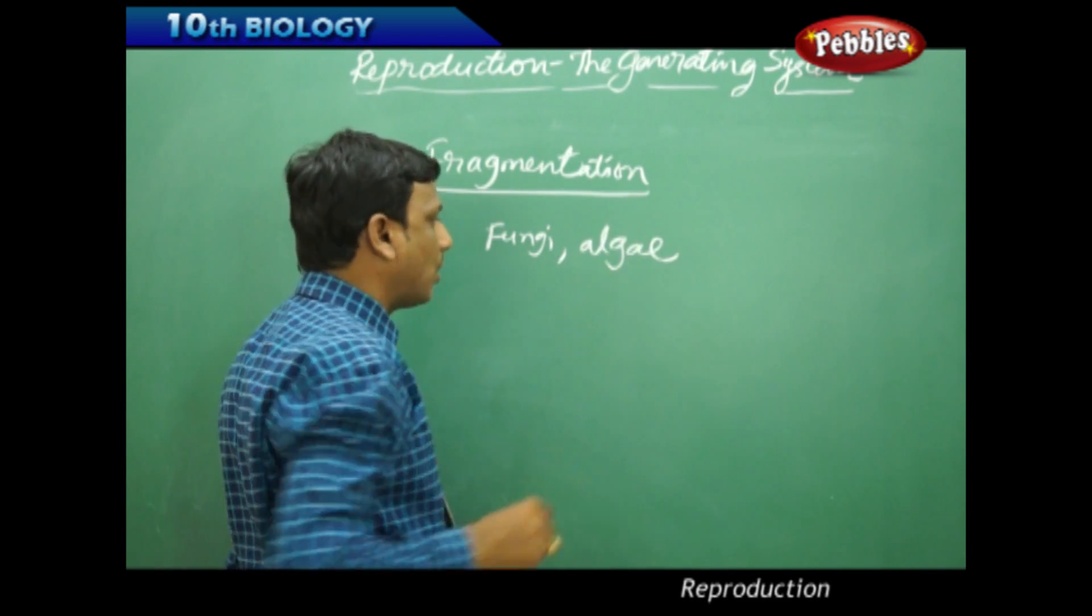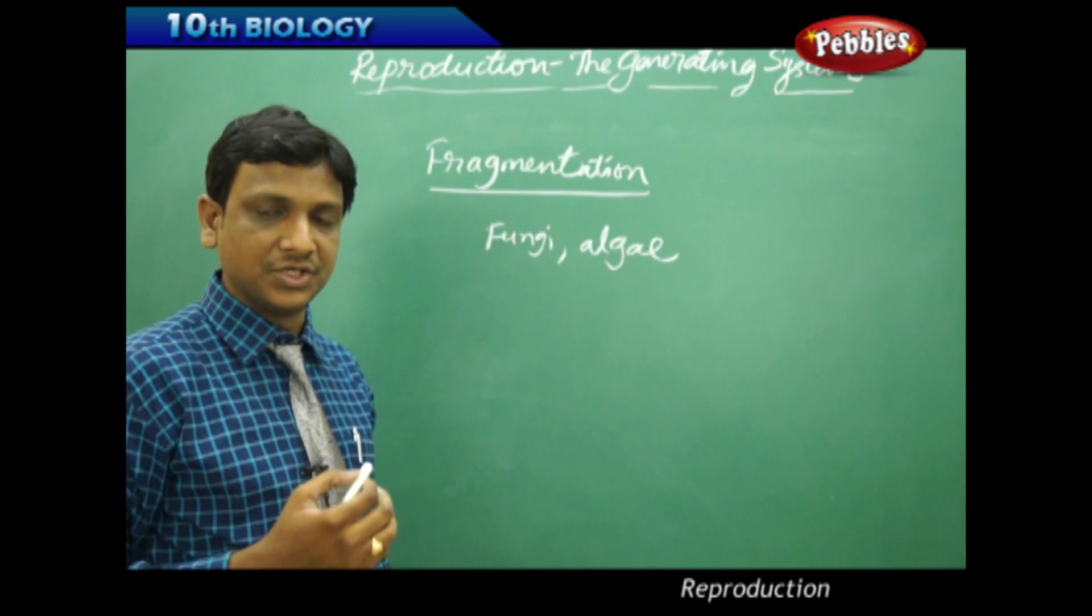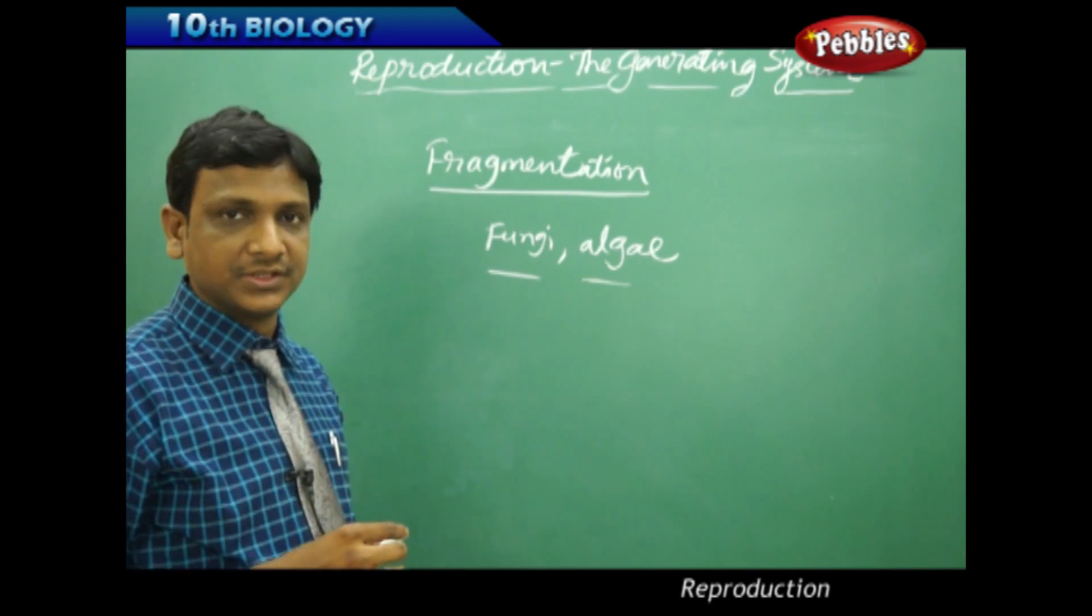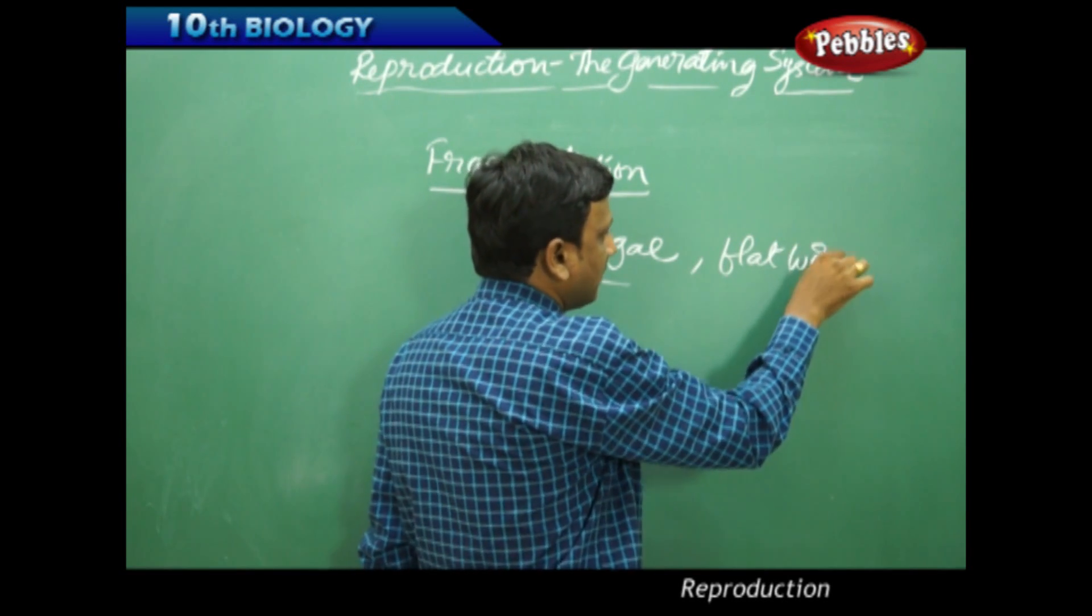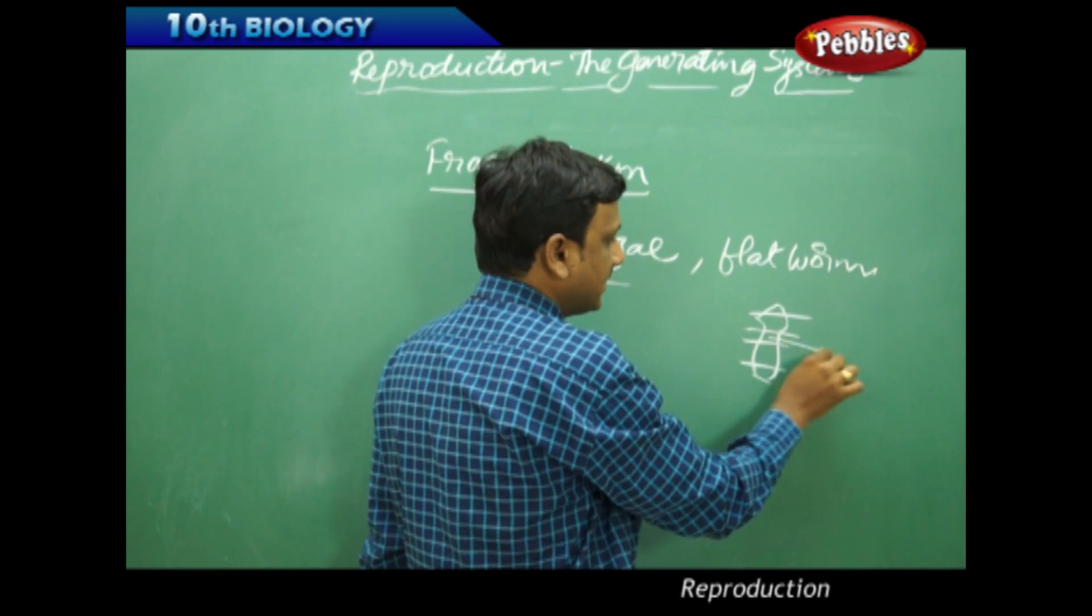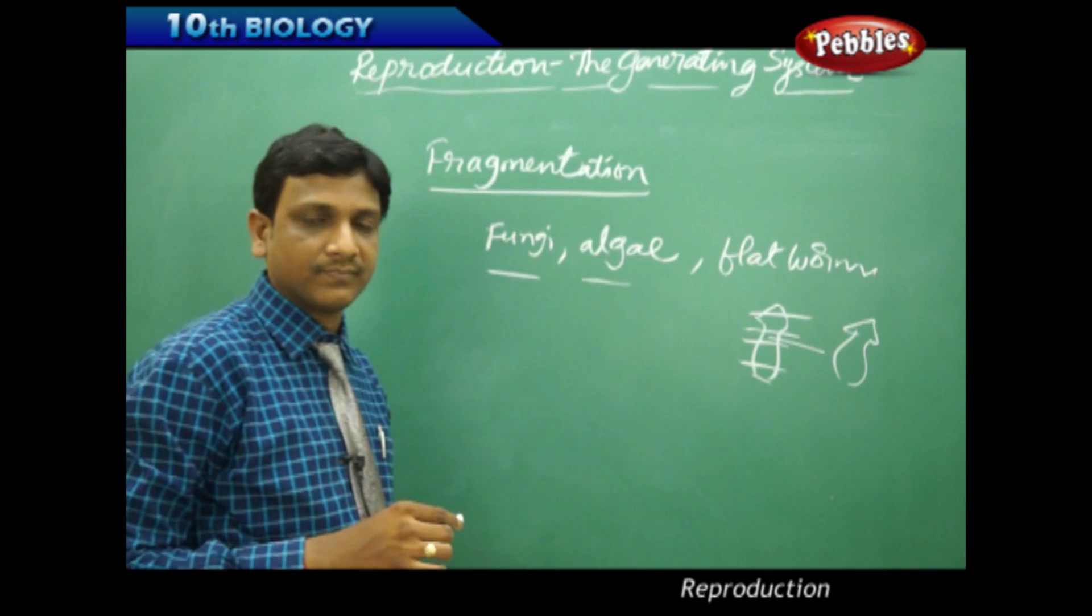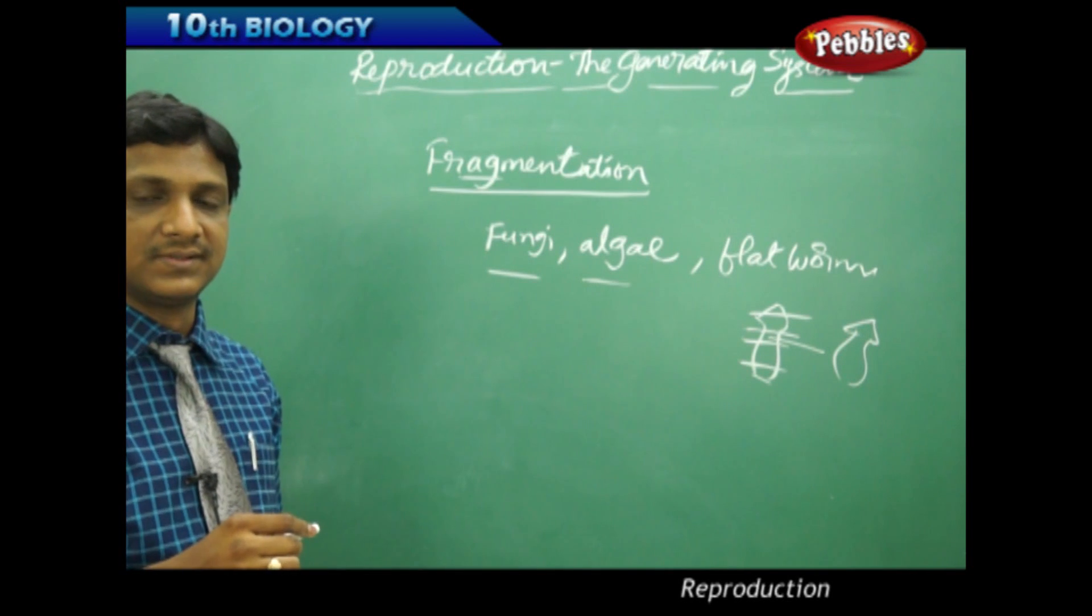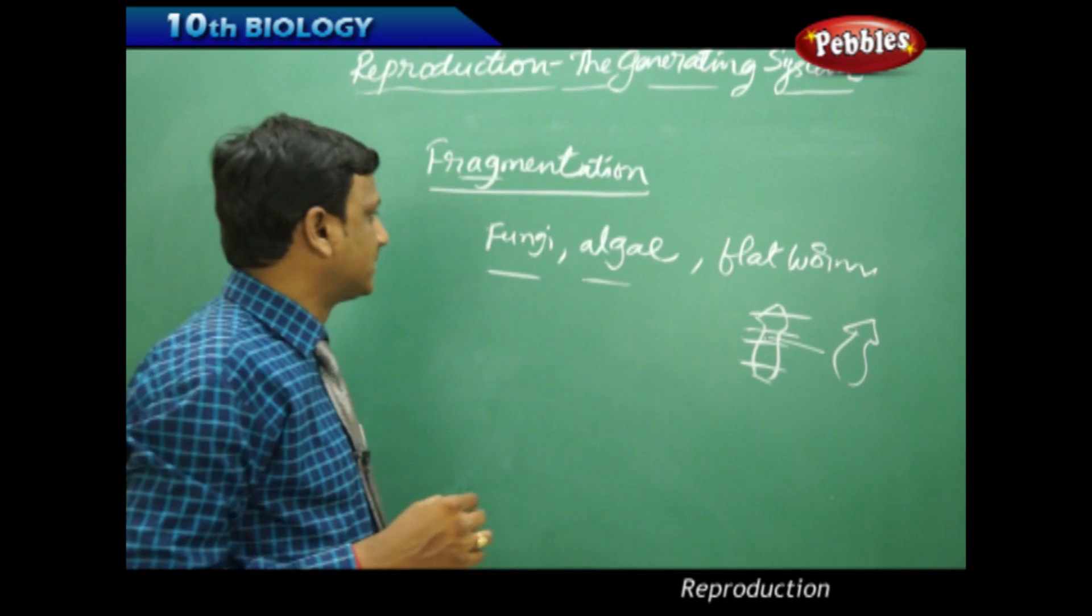They reproduce by fragmentation, though they also reproduce by sexual methods. If you take animals like flatworms and make a flatworm into different parts, each part can grow into a new flatworm. This ability of the organism is called regeneration - from the fragments, the whole organism can be produced from a small bit.